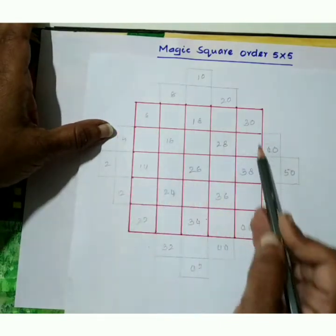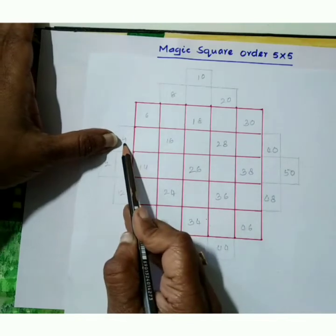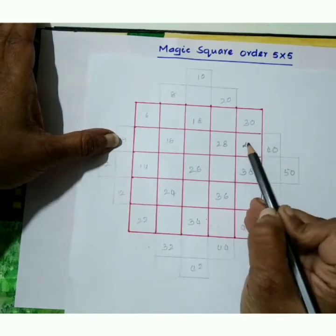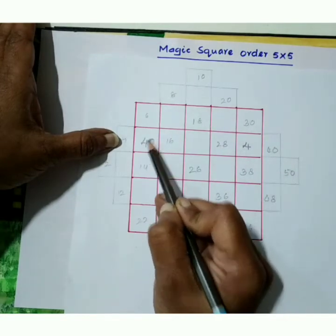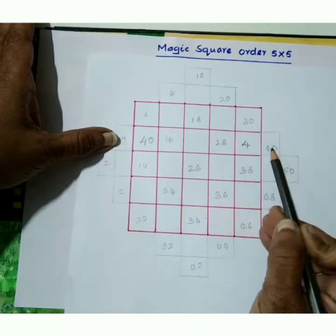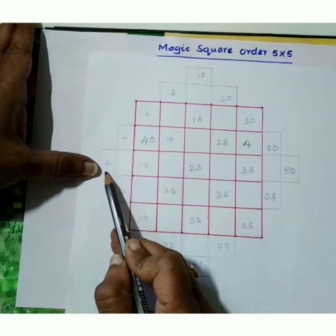First row here. This number we can shift to row end empty box here. Fill 4. Similarly, 40 comes to here. So left to right here row end box and right to left row end empty box here.